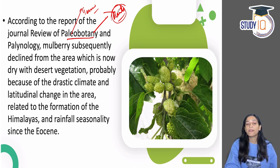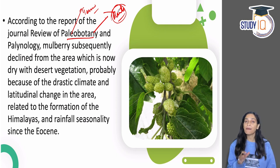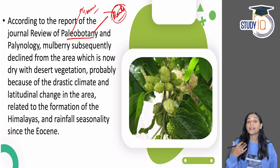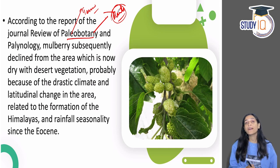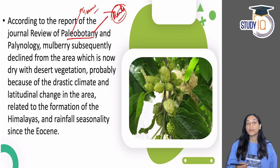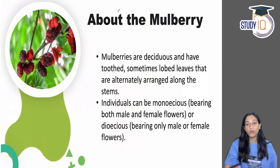Mulberry is no longer found in western India, i.e., the Rajasthan area, meaning it declined there. Today there is dry desert vegetation there, but at some time there must have been warm, humid vegetation. All of this happened due to climate change — latitudinal changes in this area, or changes in rainfall and monsoonal conditions after the Eocene period — which is why this plant no longer grows there.